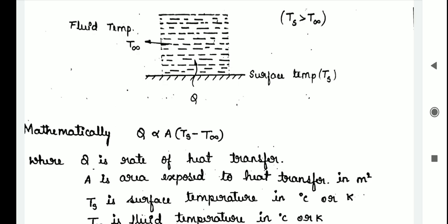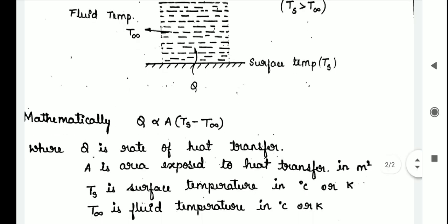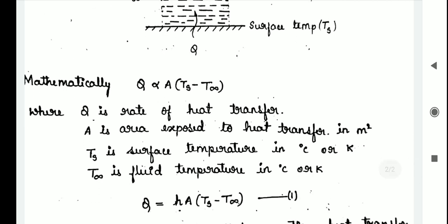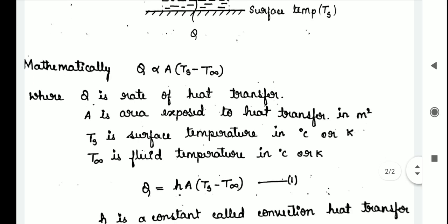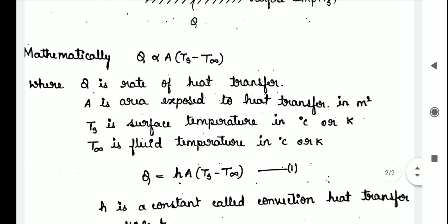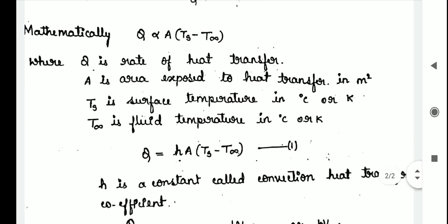So, here Q is rate of heat transfer and A is area exposed to heat transfer in meter square. Ts is surface temperature, T infinity is fluid temperature in degree Celsius or Kelvin.